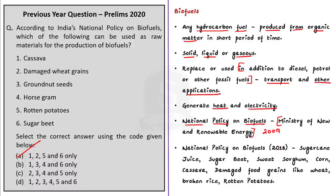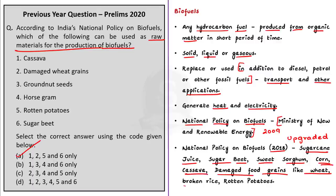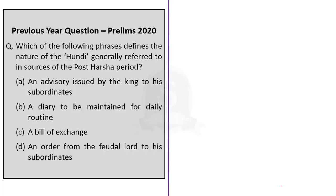The government introduced the National Policy on Biofuel by the Ministry of New and Renewable Energy in 2009, and an upgraded version was introduced in 2018. In this policy, the central government expanded the scope of raw materials to include sugarcane juice, sugar beet, sweet sorghum, starch-containing materials like corn and cassava, damaged food grains like wheat and broken rice, and rotten potatoes unfit for human consumption. Hence the correct answer is Option A: 1, 2, 5 and 6 only.